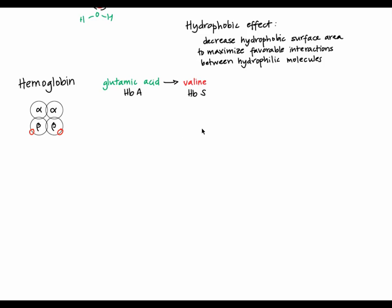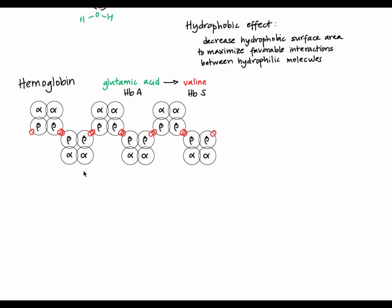When HbS isn't carrying oxygen, both beta chains have a valine exposed to the cellular environment instead of a glutamic acid. Just like we saw with octane, having hydrophobic parts exposed to water forces neighboring water molecules to forgo favorable interactions whenever they interact with that exposed valine. To maximize favorable interactions, the hydrophobic effect decreases the surface area of hydrophobic molecules by clumping them together. If one HbS clumps with the neighboring one, so that their hydrophobic valines are next to each other, then water doesn't have to interact with those hydrophobic parts and instead water can interact with other partially charged water molecules.